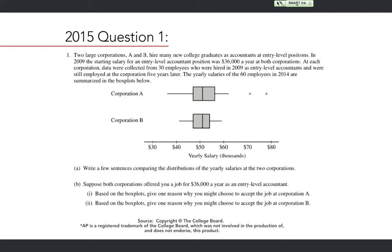In 2009, the starting salary for an entry-level accountant position was $36,000 a year at both corporations. At each corporation, data were collected from 30 employees who were hired in 2009 as entry-level accountants and were still employed at the corporation five years later. The yearly salaries of the 60 employees in 2014 are summarized in the box plots below.